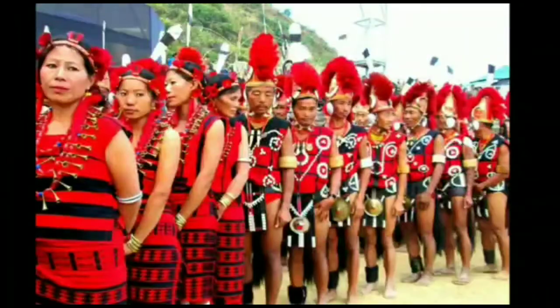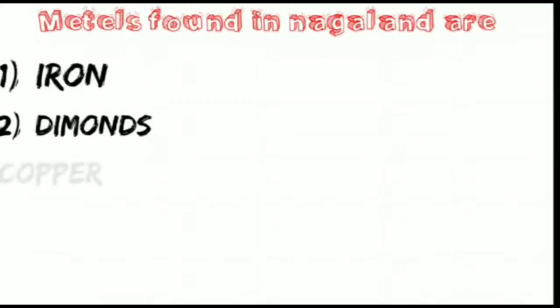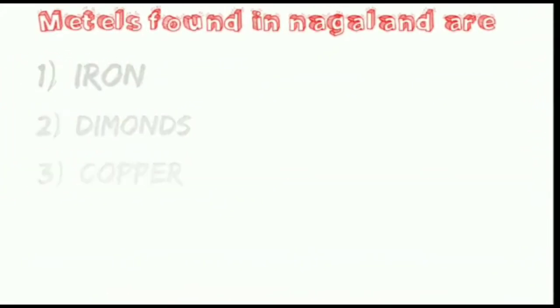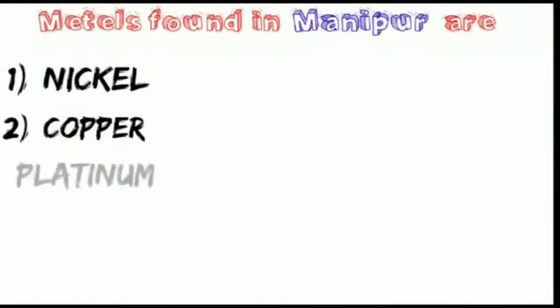As we all know, Nagaland and Manipur are very famous for their tradition. Metals found in Nagaland include iron, diamond, and copper. Metals found in Manipur include nickel, copper, and platinum.